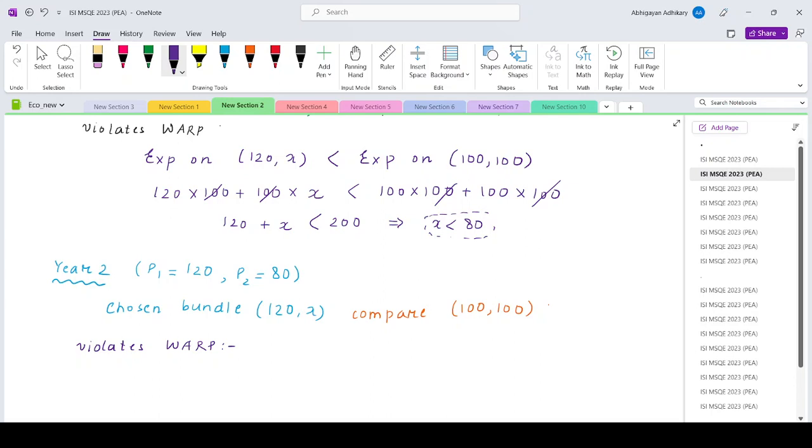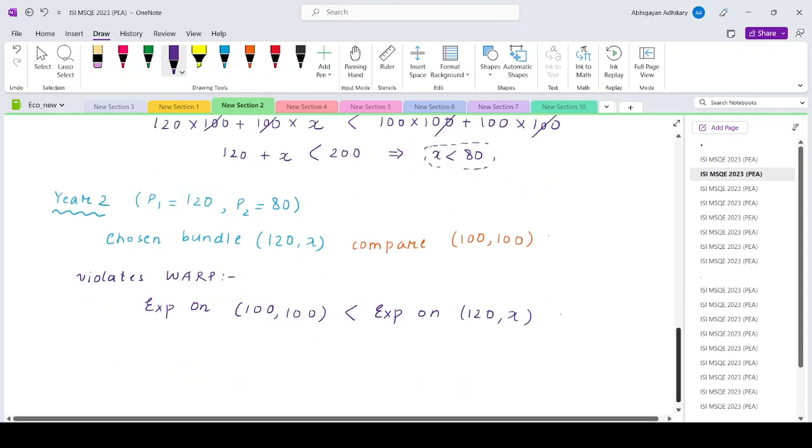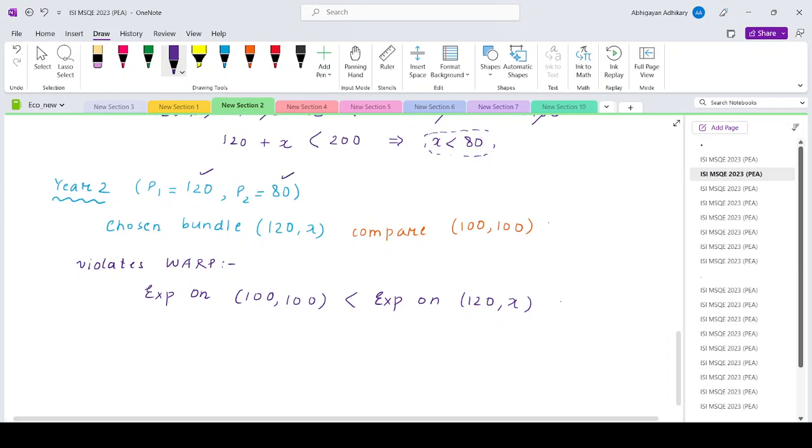But still the consumer is choosing 120, x. So in period 2, the prices are 120 and 80. So if you want to compute the expenditure for the bundle 100, 100, that is 120 into 100 plus 100 into 80, that is lesser than 100 into 120 plus 80 into x, so that is 80x. So if we divide throughout by 100, so that will be 100 plus 80 less than 120 plus 80 by 100x.